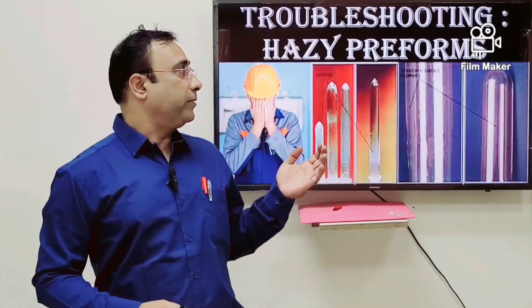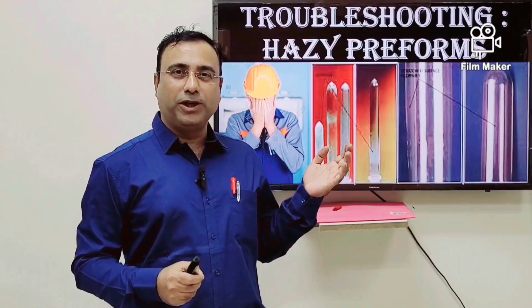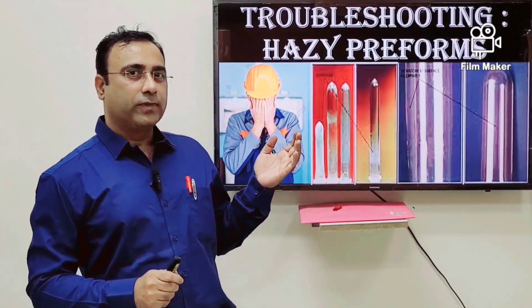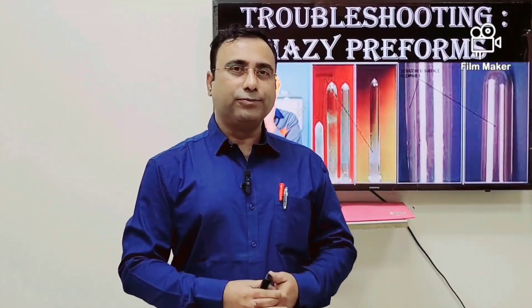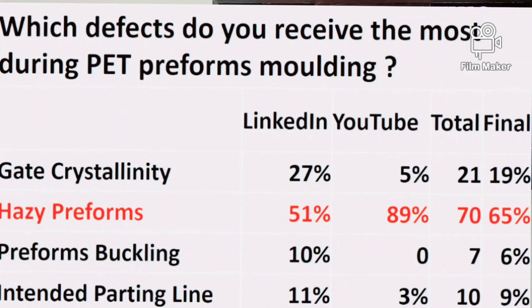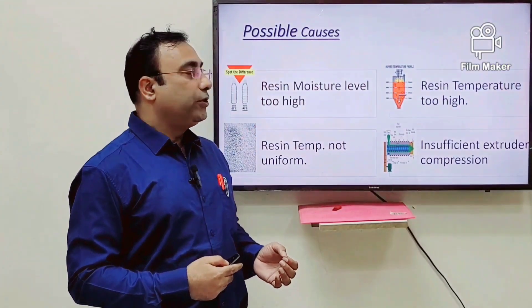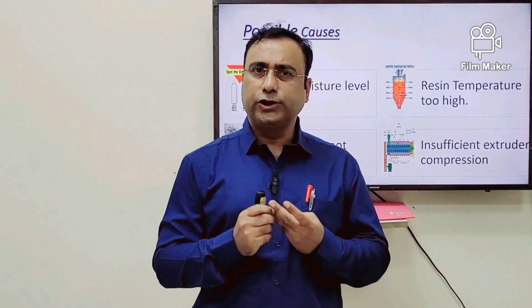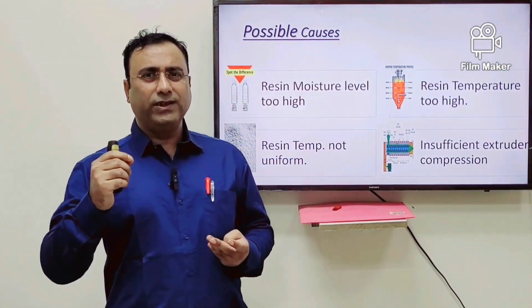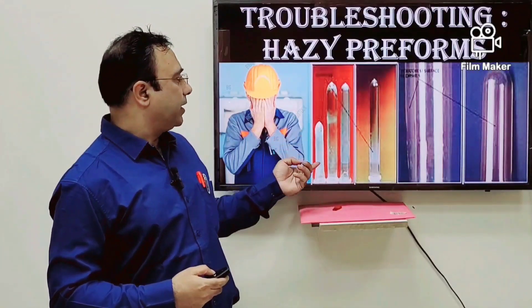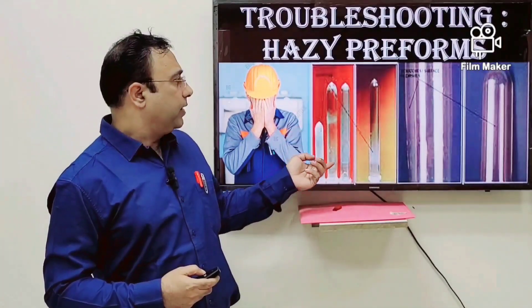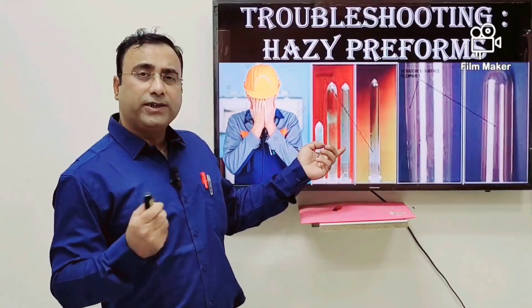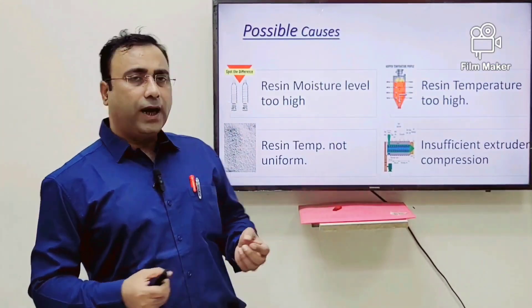In this troubleshooting series, today I bring up a serious problem in PET injection molding. Based on a survey I conducted, haziness in the preform is the most serious problem during PET injection molding. This picture shows that some areas are fully white and some areas show haziness — it's not clear but also not fully white.